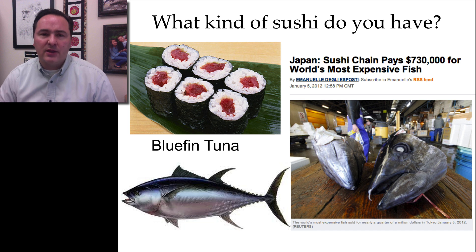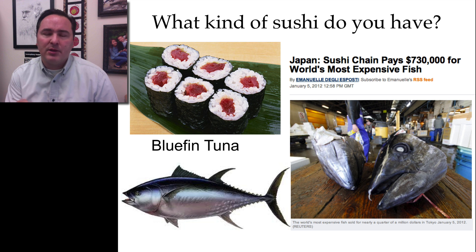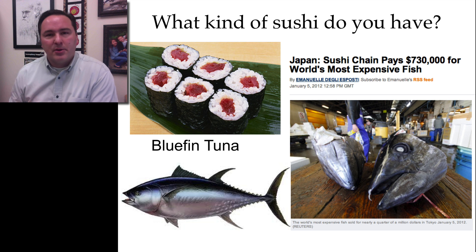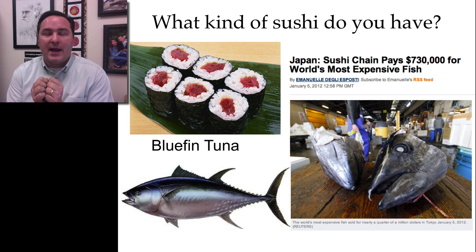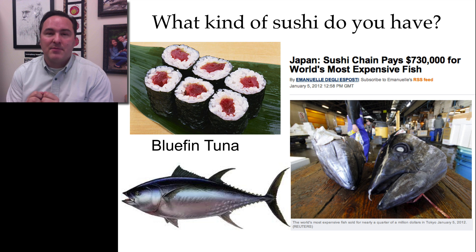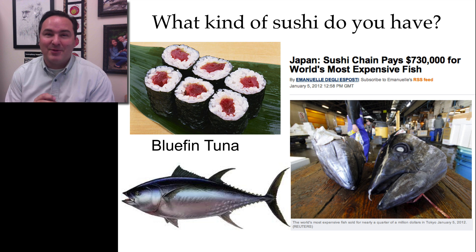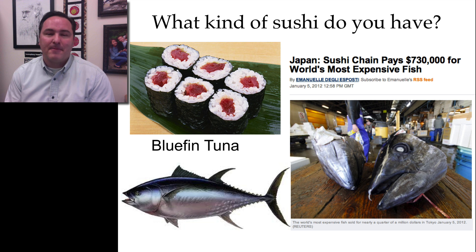To determine the species, you could take a small sample of that sushi, bring it to the lab, and determine whether it was bluefin tuna or some other species of fish — or any animal for that matter. We would do that by looking at the DNA.